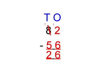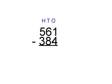And then we get our answer of 26. Here is our next sum: 561 minus 384. We need to subtract the ones in the ones column first, which is 1 minus 4.